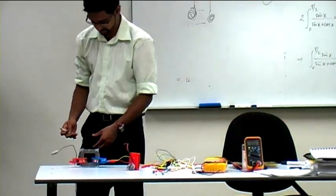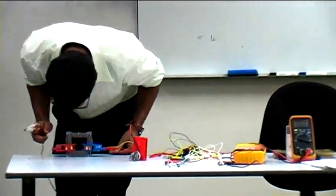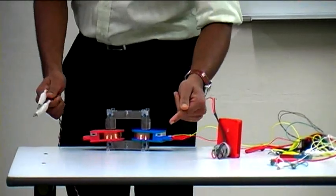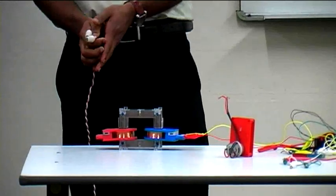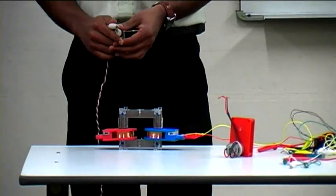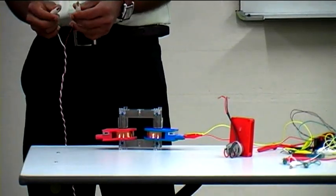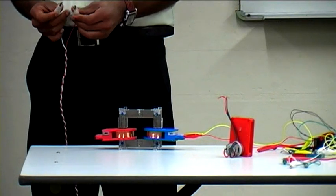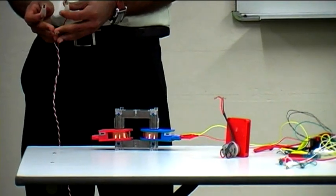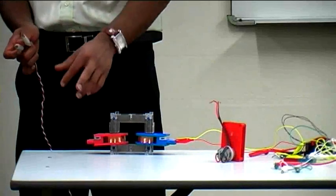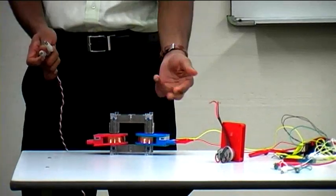Now before I chuck it in, we have 300 turns as my primary coil, 600 turns as my secondary coil. If someone wants to tell me what kind of transformer I want to make, is it step down or step up? Step up, right? More number of turns, we're going to get a greater voltage.